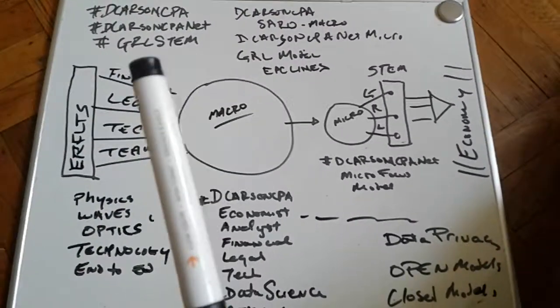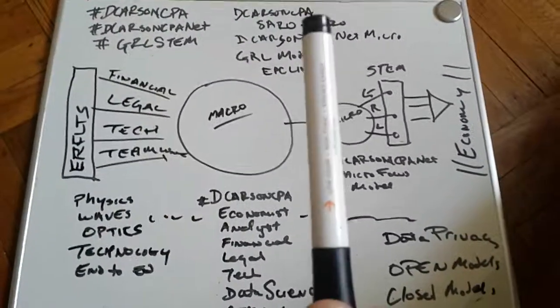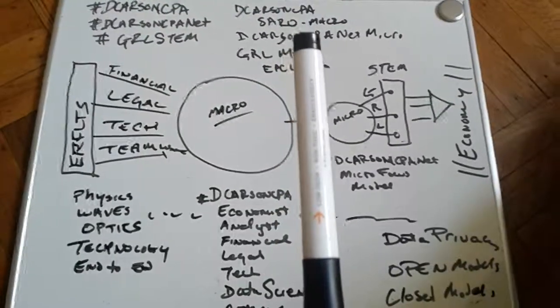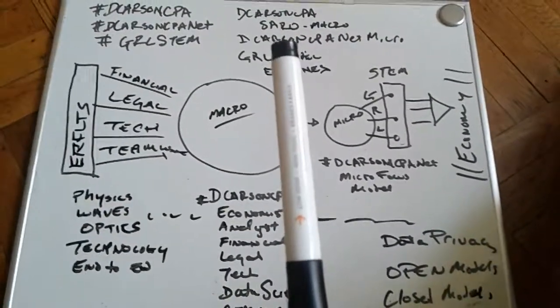DeCarson CPA, DeCarson CPA Net, GRL STEM, DeCarson CPA on the SARA lines. It's a macro model. SARA is a service, applied, research, and outreach.